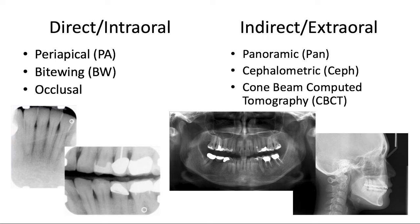We can break down the types of x-rays into two big categories. On the left we have our direct or intraoral images, taken with the receptor inside the mouth, so x-ray photons are directly interacting with the receptor. Examples are the periapical or PA, the bite wing or BW, and the occlusal image.